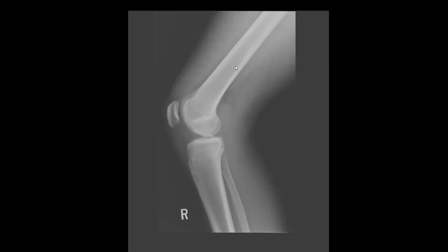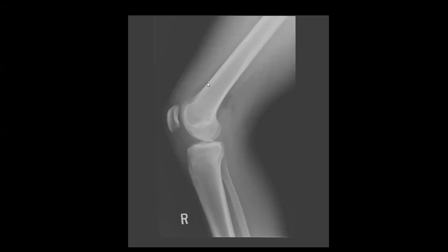If we take a look initially, we notice that there's no acute fracture or dislocation. The alignment of the knee looks intact. If you look at the relationship between the femur, the patella, and the tibia, everything looks great. There is, however, a small suprapatellar joint effusion. There's an increased density in this suprapatellar recess — it should normally look radiolucent, just like this pre-femoral fat pad. This whole area underneath the quadriceps tendon should be radiolucent, but we have this increased density here suggesting a suprapatellar effusion.